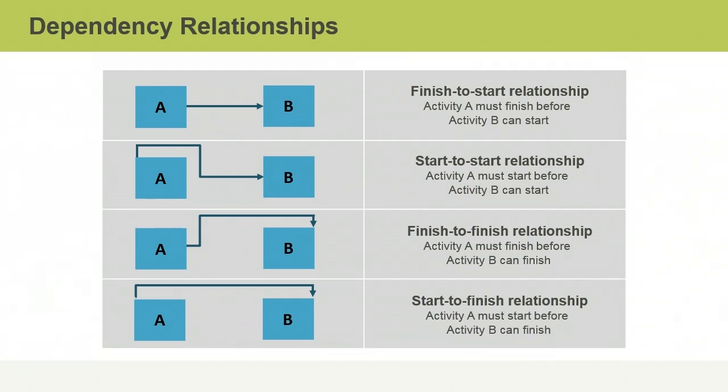In a finish-to-finish relationship, one activity must finish before another activity can finish. In a finish-to-finish relationship, an arrow connects the right-hand side of activity A to the top right-hand corner of activity B.